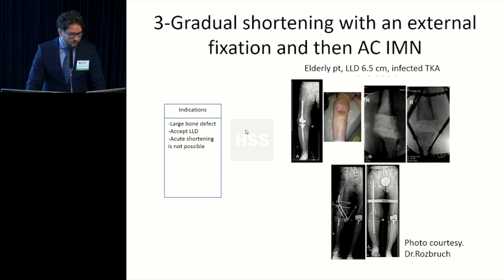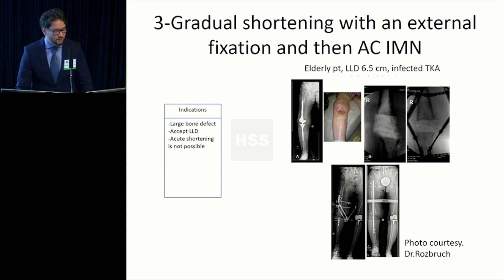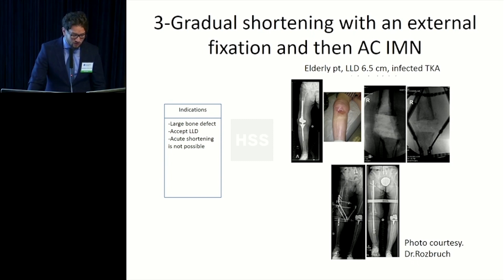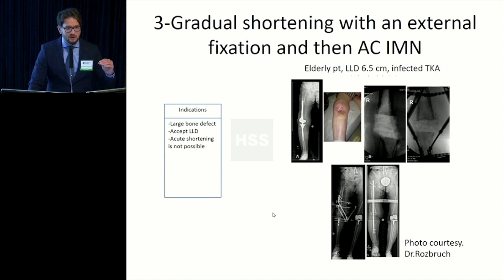The third strategy is gradual shortening with external fixation, followed by placement of an antibiotic IM nail. This elderly patient had a large bone defect but an acceptable LLD and was not a candidate for lengthening. Acute shortening was not possible, so even placing a nail immediately wouldn't allow soft tissue closure. The approach: use a frame to achieve fusion and once closure and maximum bone contact are obtained, convert to an antibiotic IM nail.